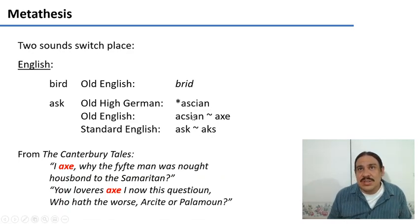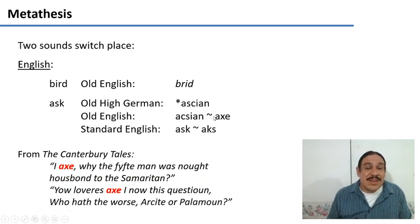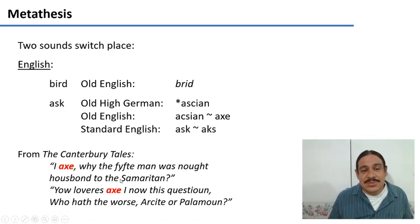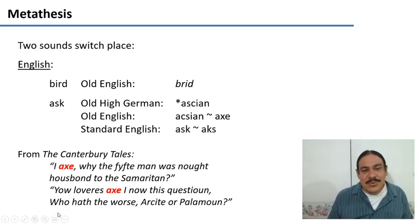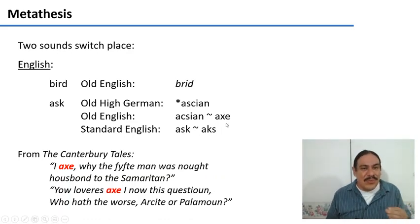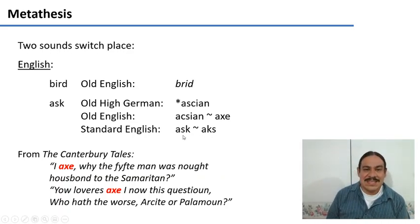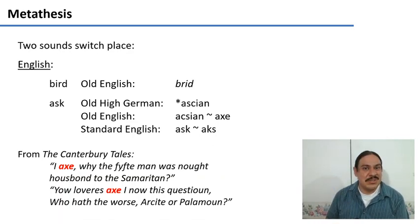This is the form that Beowulf used about 900 years ago. This is the form that Chaucer used about 700 years ago. And as a matter of fact, Chaucer did use ax, as in 'I ax where the fifth man was not husband to the Samaritan' and 'Now will you axia now this question, who hath the word, Arcite or Palamon?' So this ax was the standard form of that verb up until the 1600s when it metathesized again, and it became our standard ask with the s first. But we still have ax in many dialects, and these two sounds switch places every 500 years, so maybe in the future the default form will be ax again.